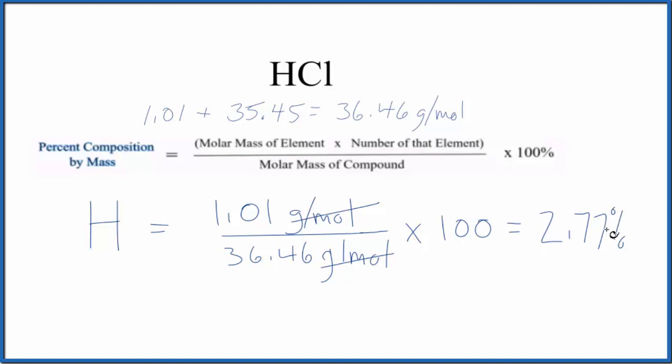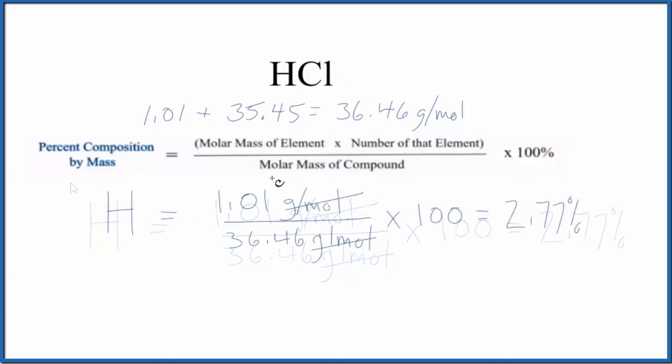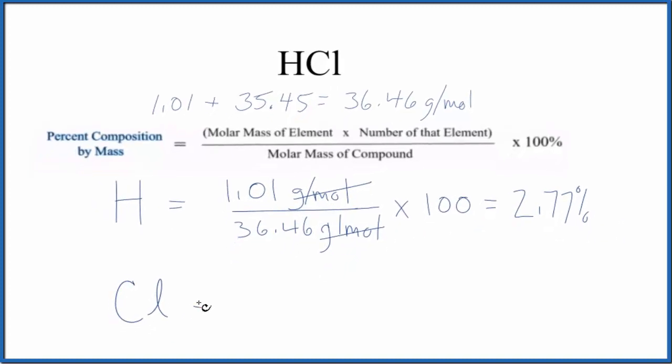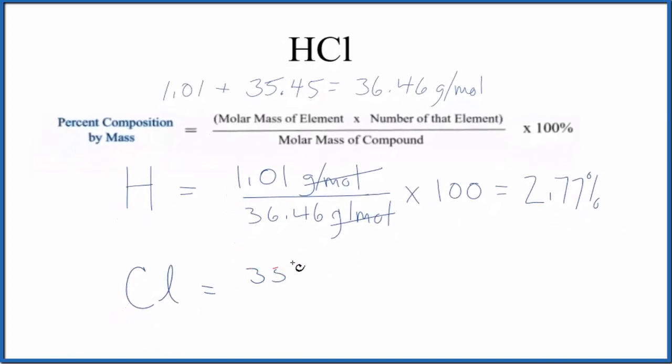Let's do this for chlorine. For chlorine on the periodic table, that's 35.45 grams per mole. The units are going to cancel out, so we divide by the molar mass for the compound.